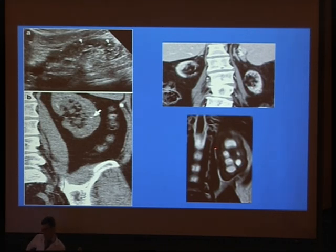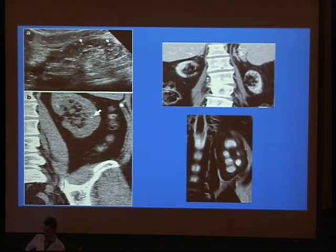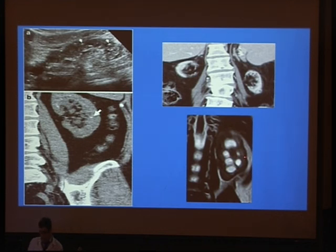MRI is a useful modality but more expensive. Without using contrast media, we can use T2-weighted MRI coronal images and find a kidney with reduced parenchymal signal intensity. This is a case of chronic parenchymal renal disease, showing dilated calyces and irregular contour.